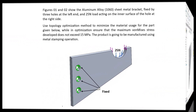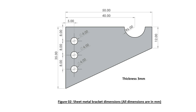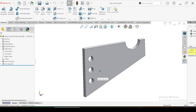In this video we are mainly focused on how to do topology optimization in SOLIDWORKS using this example. The figures show an aluminum alloy 1060 sheet metal bracket, fixed by three holes at the left side, with a 25 newton load acting on the inner surface of the hole at the right side. We use the topology optimization method to minimize material usage for this part. I will provide a link to download this model in the video description.